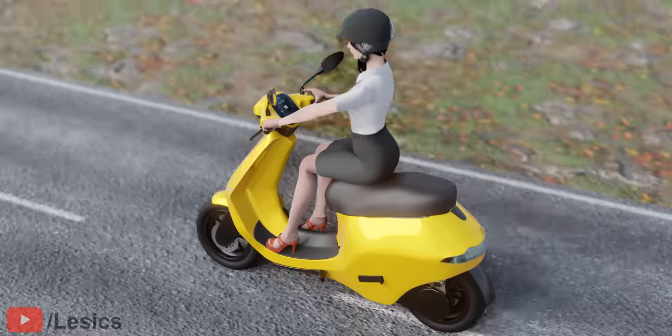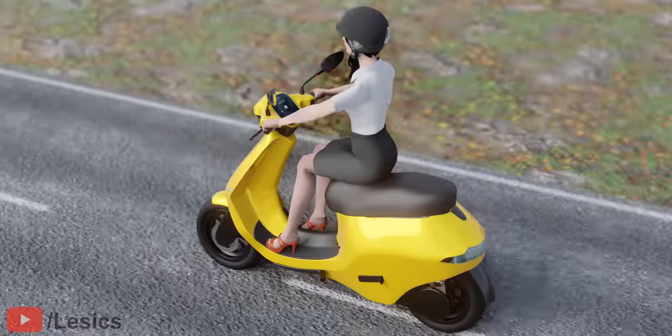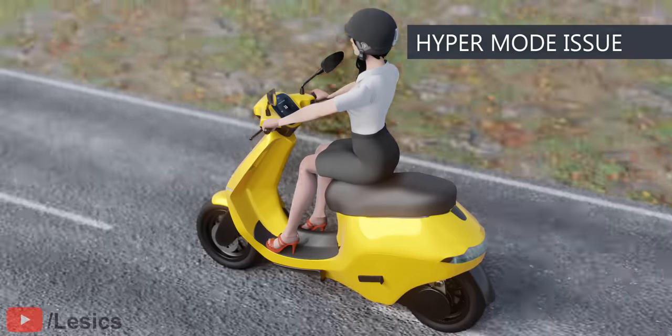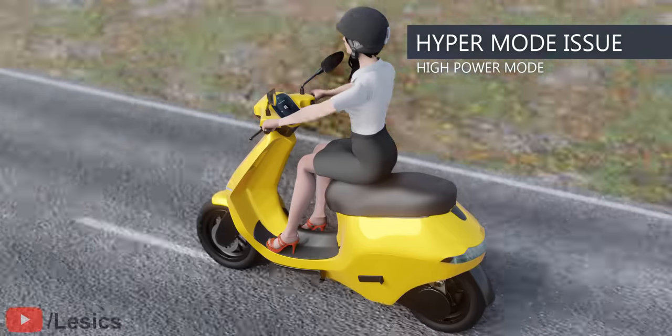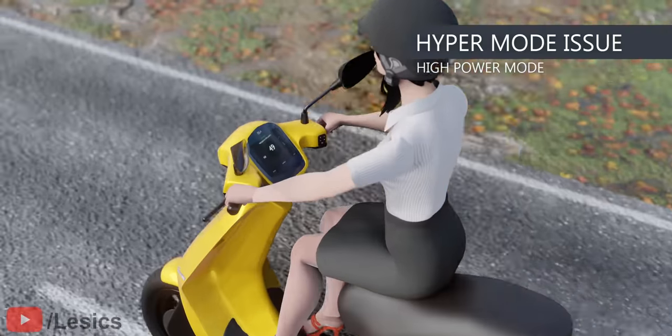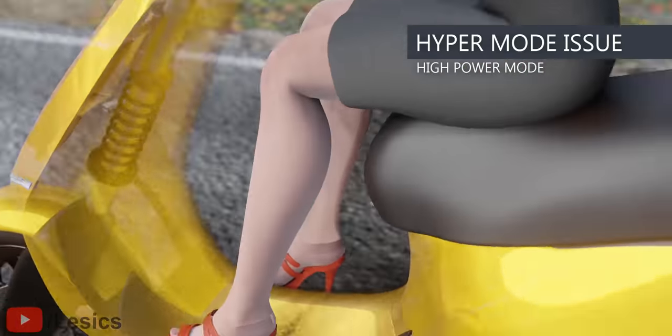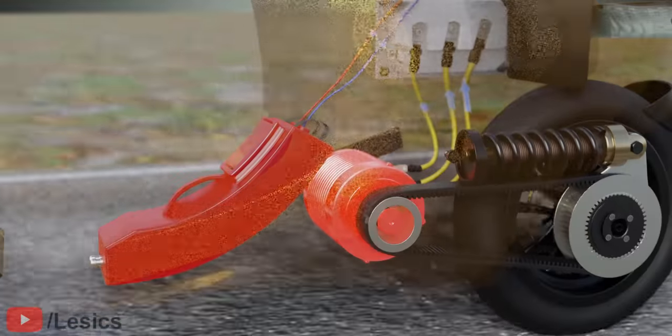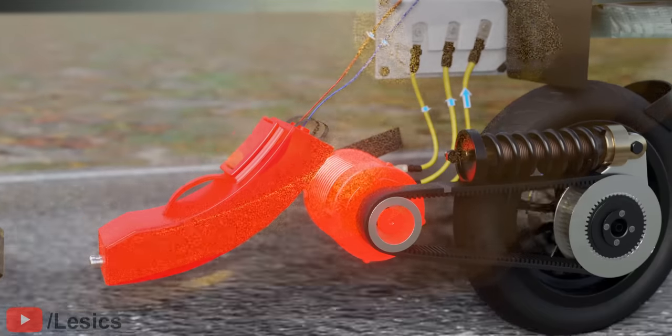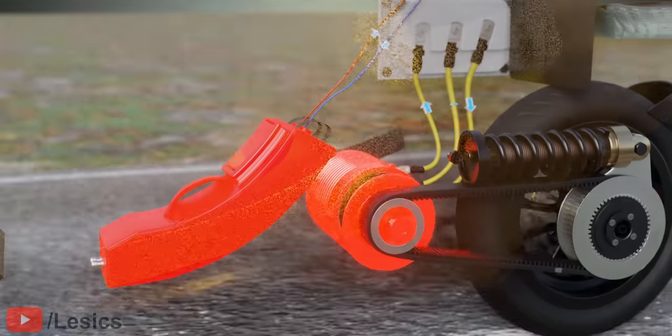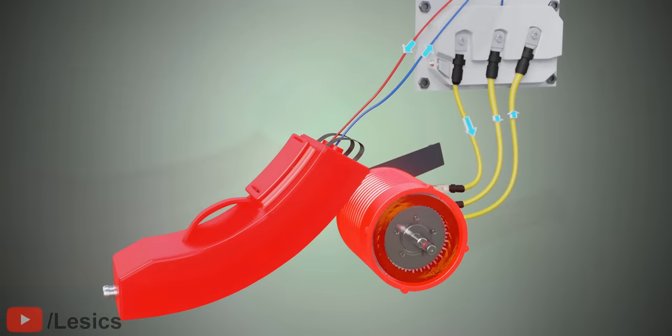One major issue with the Ola scooter is that when the user tries to drive it on hyper mode, the scooter automatically switches to normal mode after some time due to the heating of the motor and battery. In hyper mode, the motor draws high power for a longer duration and overheats, along with the battery. If this overheating continues, the motor winding may burn and the battery can cause a fire.